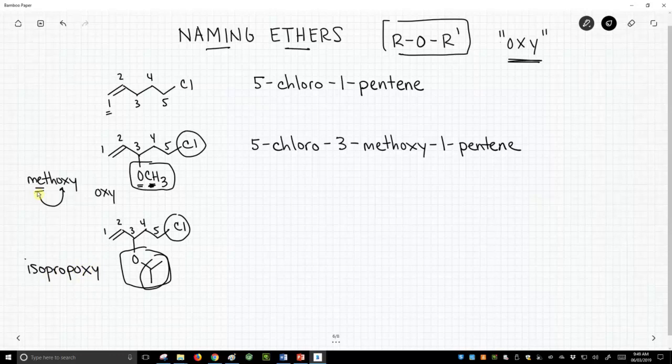So just as up top, we didn't say methyl-oxy. We said methoxy. Now this is not isopropyl. It's isopropoxy. So isoprop, that's an I, so that still follows chloro. So 5-chloro, 3-isopropoxy, 1-pentene.